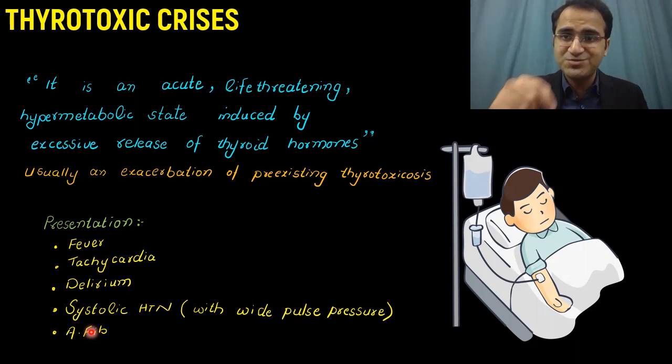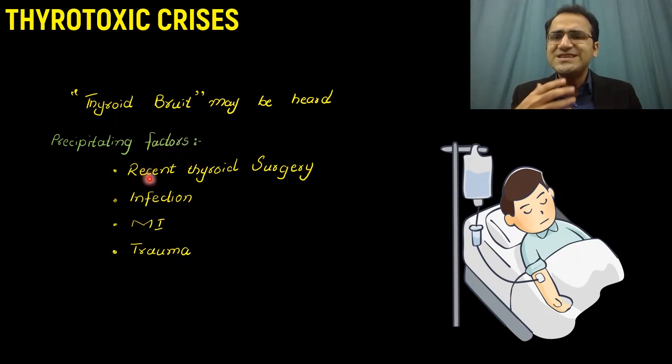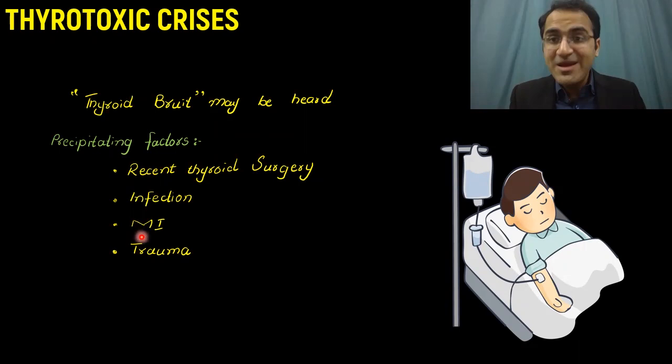On examination, you might see an enlarged thyroid gland and you might also be able to appreciate a thyroid bruit. The precipitating factors of thyrotoxic crisis include recent thyroid surgery, infection of the thyroid gland causing thyroiditis and inflammation, rupture of thyroid cells releasing thyroid hormone into the blood, and an MI or trauma can even cause thyrotoxic crisis in a patient with pre-existing thyroid disease.